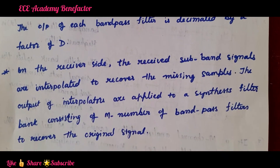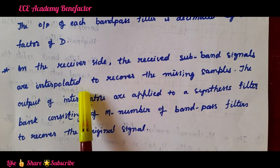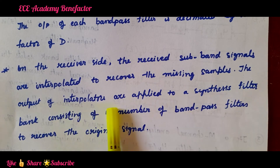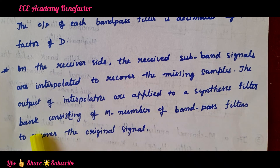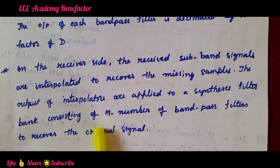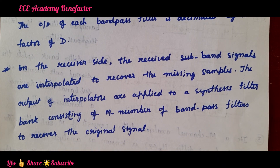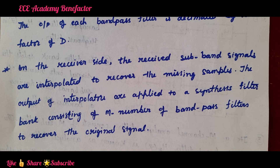On the receiver side, the received subband signals are interpolated — that is, up sampled — to recover the missing samples. The output of the interpolators is applied to a synthesis filter bank consisting of m bandpass filters to recover the original signal. Subband coding is used for speech signal processing and is one of the applications of multirate DSP systems. At the transmitter we have the analysis filter bank with a down sampler/decimator, and at the receiver side we have interpolators and the synthesis filter bank.